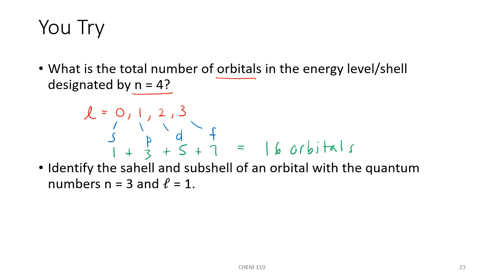Identify the shell and subshell of an orbital with quantum numbers n equals 3 and l equals 1. We write the main energy level first (3), then the letter designation for l — an l of 1 corresponds to p. So the shell and subshell is the 3p subshell.